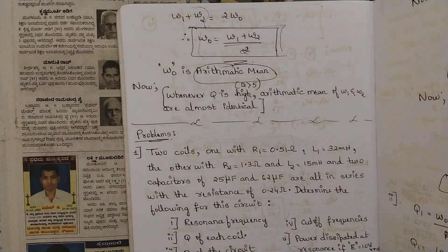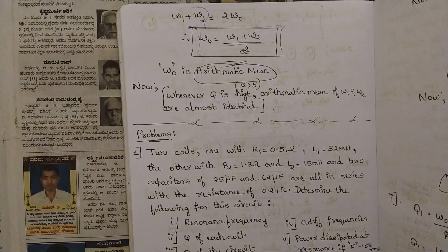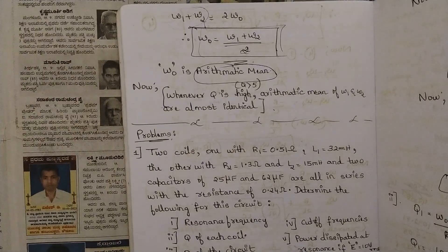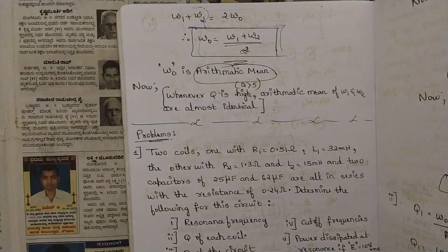So those were the theory topics covered across these four sessions. We discussed the role of bandwidth and selectivity, derived the final expression for arithmetic mean, and examined many relations involving half power frequencies and maximum power.